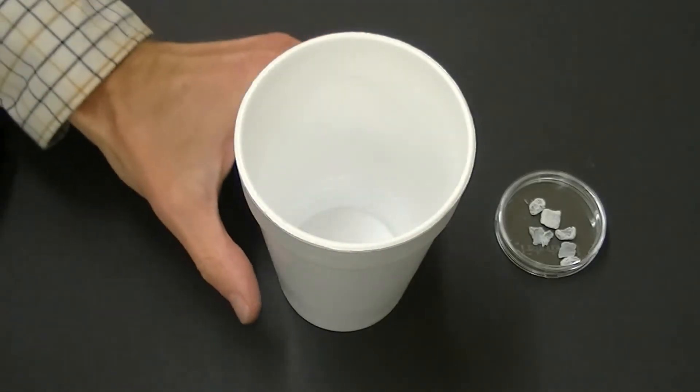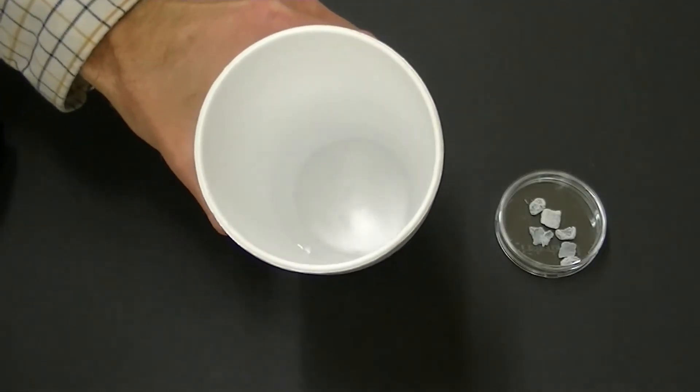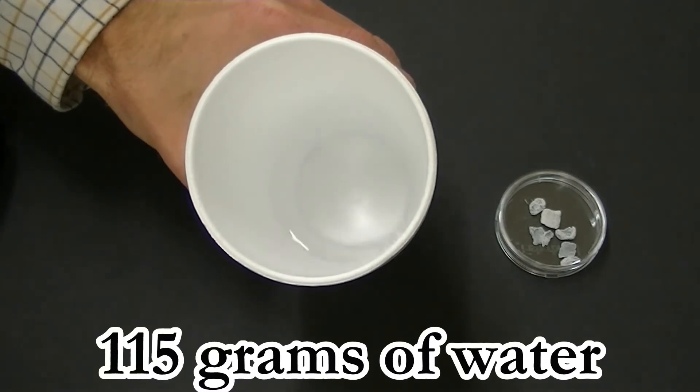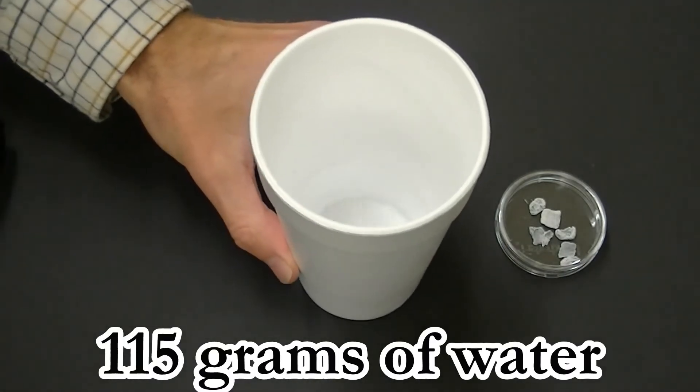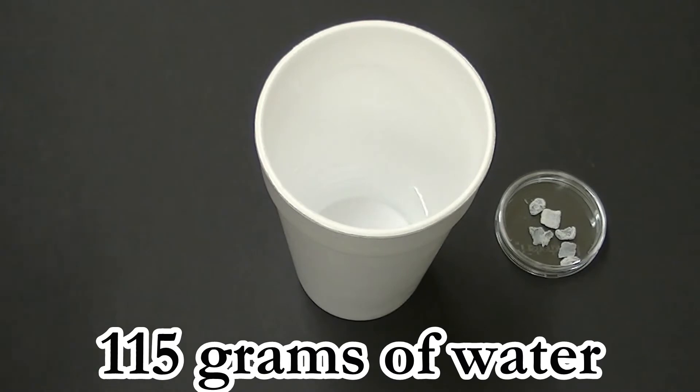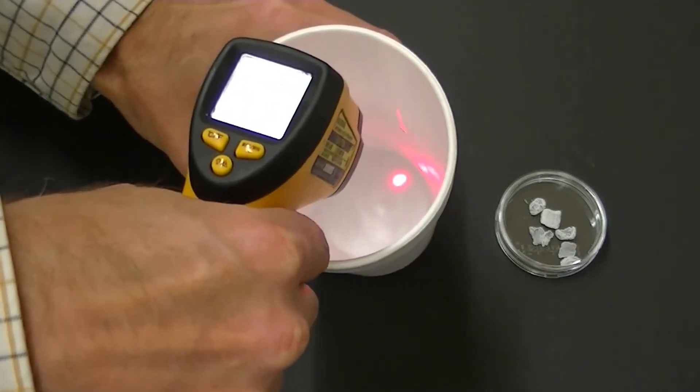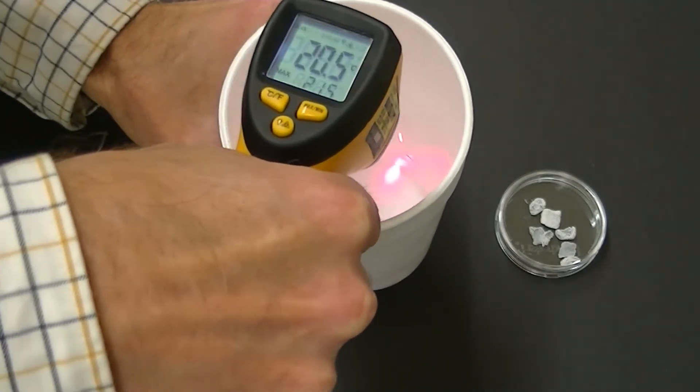All you need to carry out this reaction is some water and calcium metal. Here, I have weighed out 115 grams of water into this styrofoam cup. You'll need to take the initial temperature of the water, which you'll note here is 20.3 degrees Celsius.